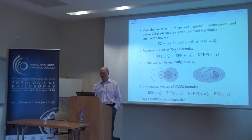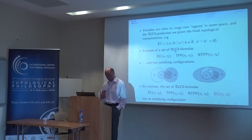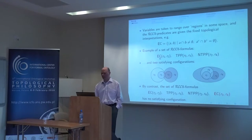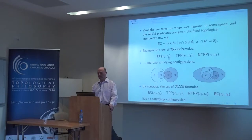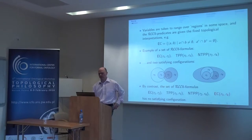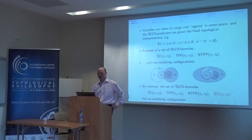Here's an example of RCC8 formulas. RCC8 formulas are completely simple — there's almost no syntax. So here we have four variables, R1, R2, R3, R4. We are told that R1 and R2 are in external contact. We are told that R1 is a tangential proper part of R3. We are told that R2 is a non-tangential proper part of R4. And here are two satisfying configurations — R1 is externally connected to R2, R1 is a tangential proper part of R3, R2 is a non-tangential proper part of R4.